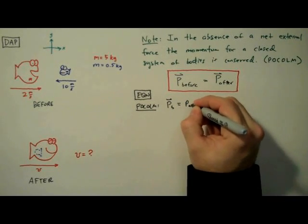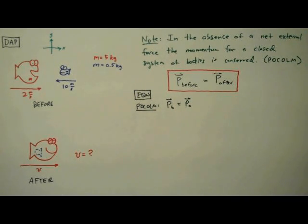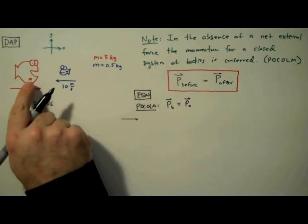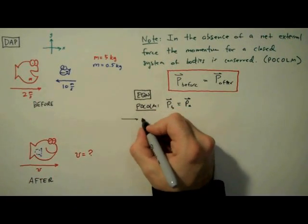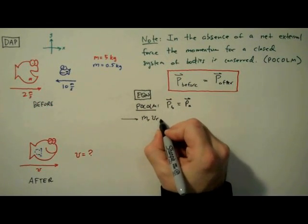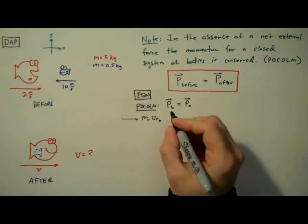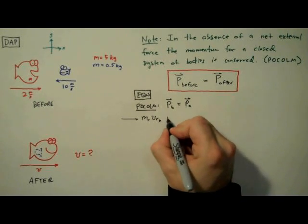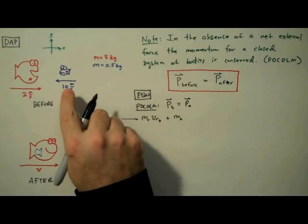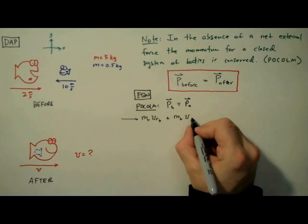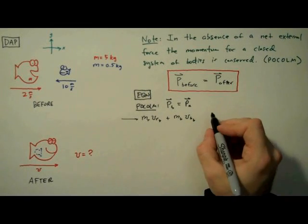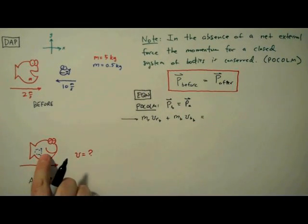So I'm going to write p before is equal to p after. And you'll recall that momentum is just the product of mass and velocity so I'm going to start by writing the mass of the red fish times the velocity of the red fish before plus the mass of the blue fish times the velocity of the blue fish before equals and now we're going to sum the momentums after.